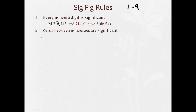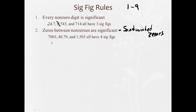Rule two: zeros between non-zero digits are significant. We call these 'sandwiched zeros.' For example, in a number like 7,003, since the 7 and the 3 are both significant, the zeros between them are sandwiched and therefore significant. That gives four significant figures. Similarly, another number with a sandwiched zero also has four significant figures.